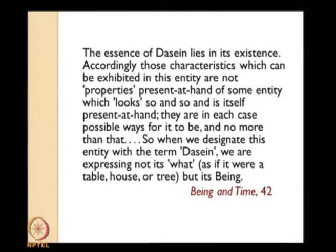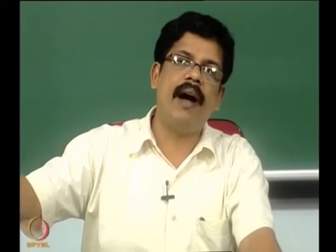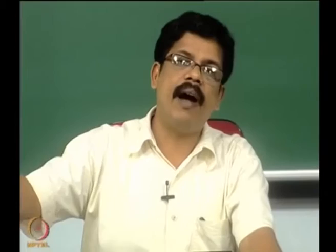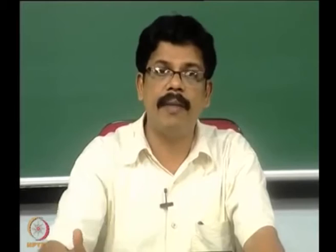The characteristics that can be exhibited in Dasein are not properties present-at-hand of some entity. They are in each case possible ways for it to be, and no more than that. When we designate this entity with the term Dasein, we are expressing not what it is — as if it were a table, house, or tree — but its being. Dasein's being is specifically different from the being of other entities.